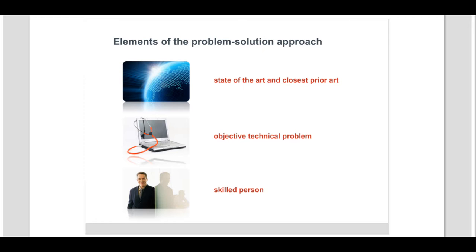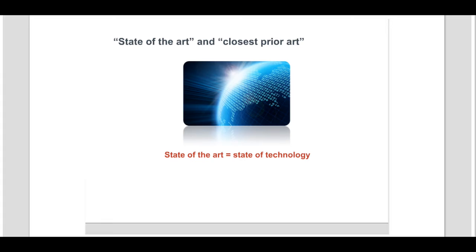The state of the art should be understood as the state of technology. It consists of prior art information relevant to some field of technology. Therefore, the closest prior art will be chosen from a field of technology and not from a field which belongs to the list of exclusions like commerce and business methods.